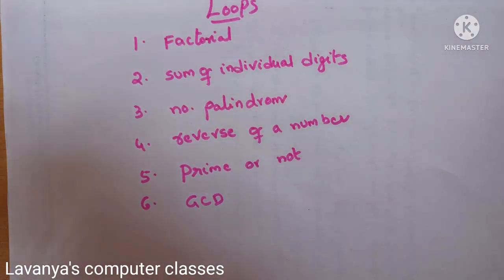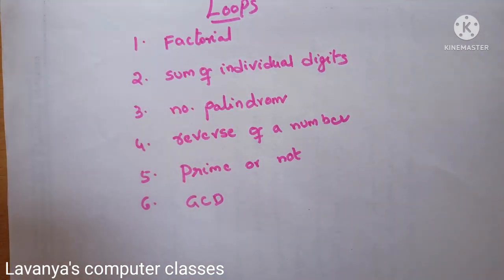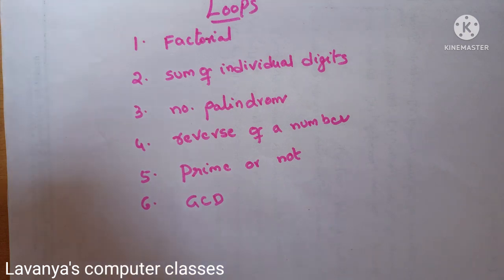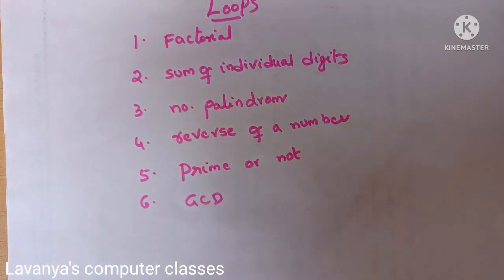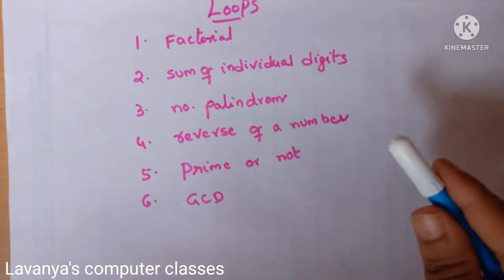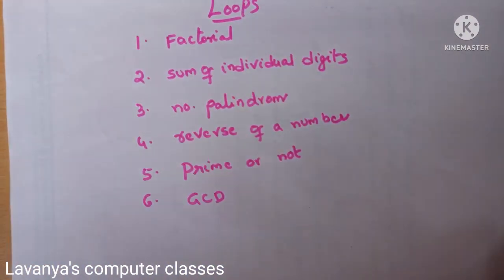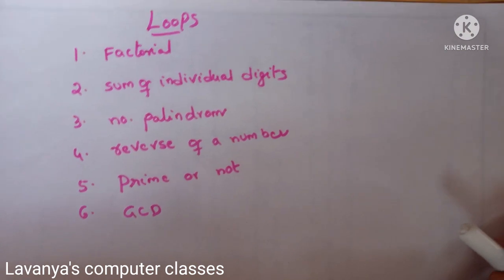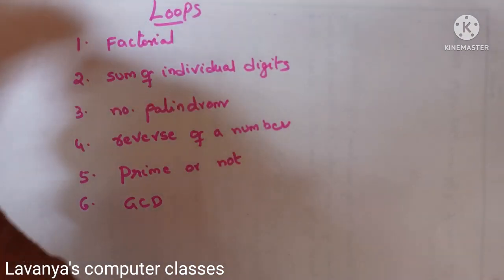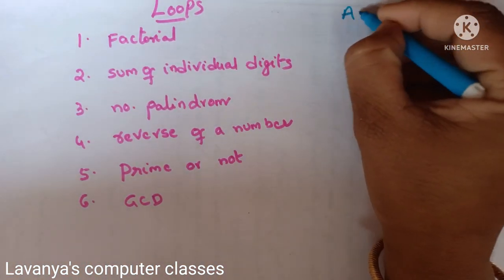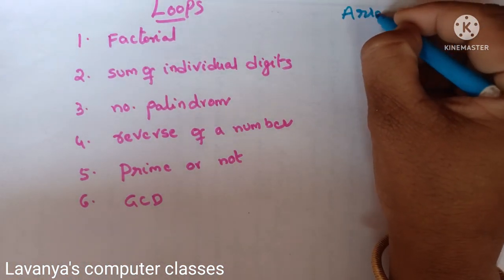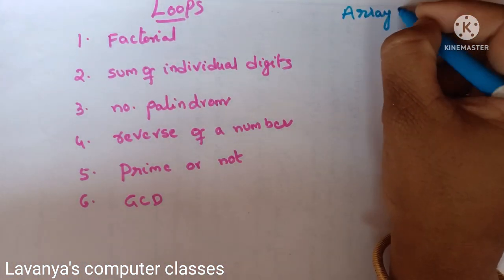Whether it is for loop, while loop, or do-while, these programs are very important. Concept-wise, if they ask you to explain the for loop with an example program, any one example program like factorial, palindrome, or any other program will work.